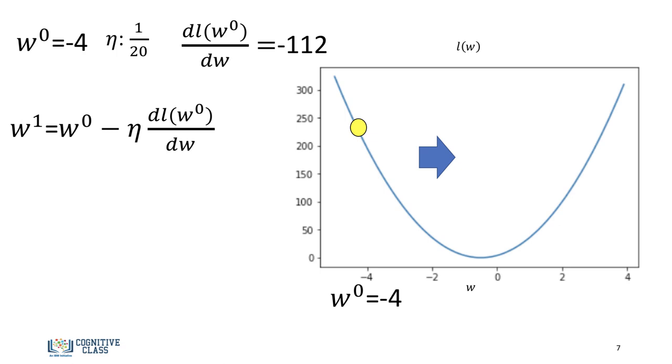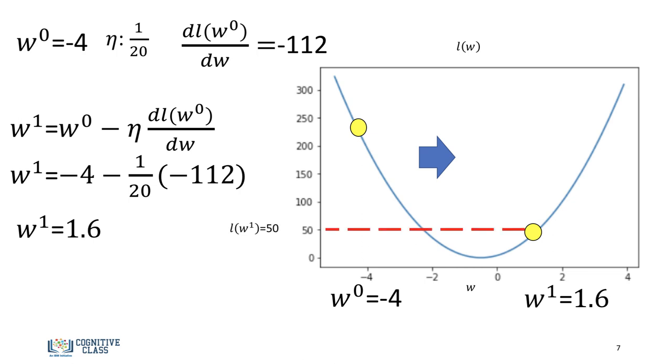We calculate the first iteration. We update our parameter value. And it generates a new loss value as follows. In this case, it's 50. And the loss generated from the first iteration is less than our initial guess.